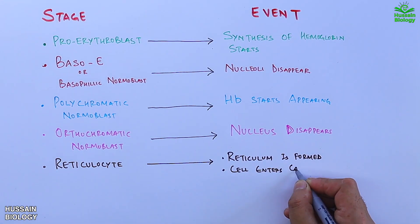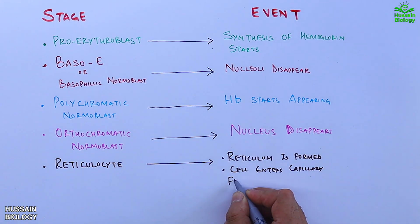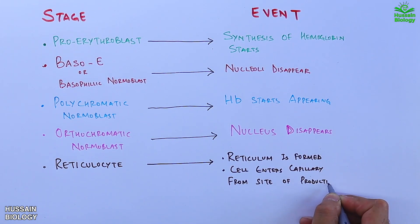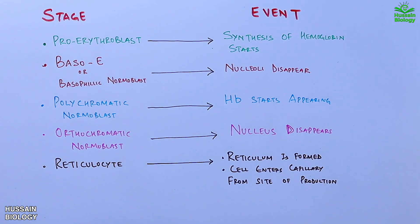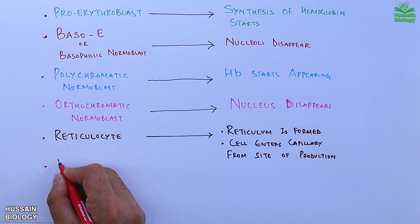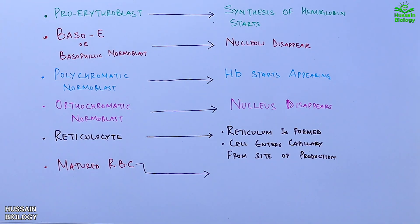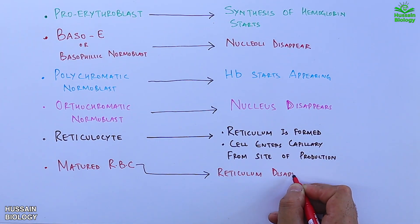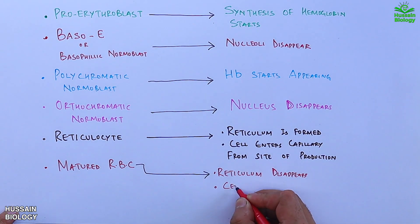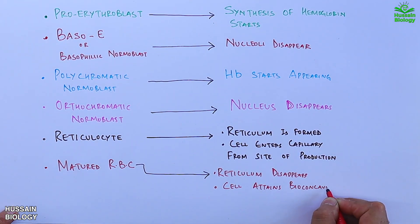The cell enters the capillary from the site of production at the orthochromic normoblast stage. In the mature RBC stage, the reticulum completely disappears and the cell attains a biconcave disc shape.